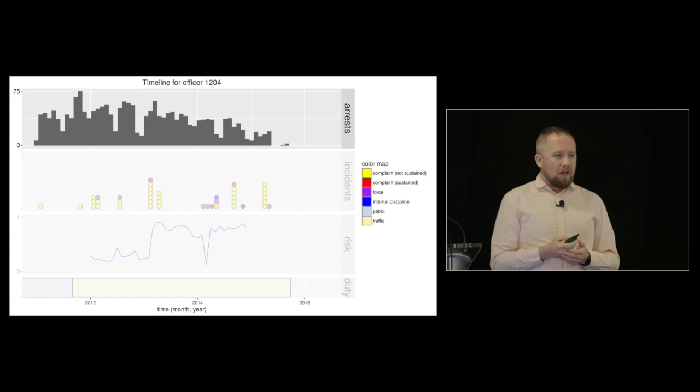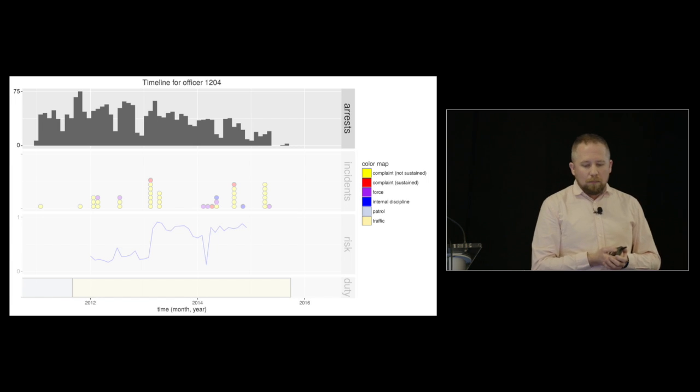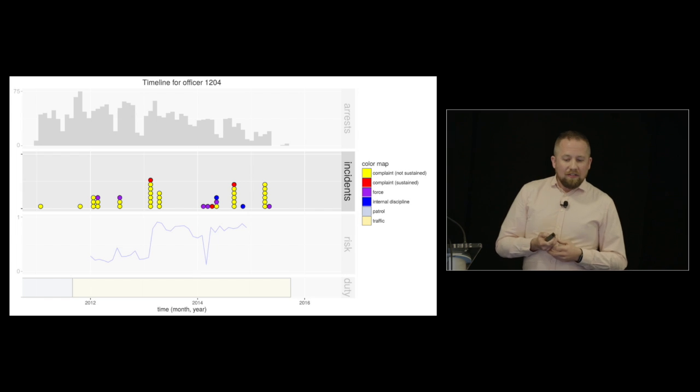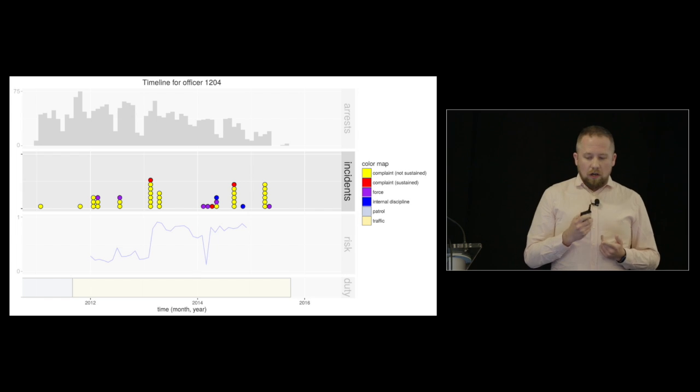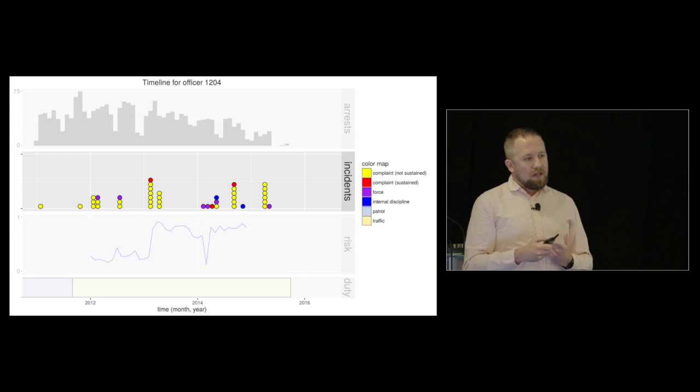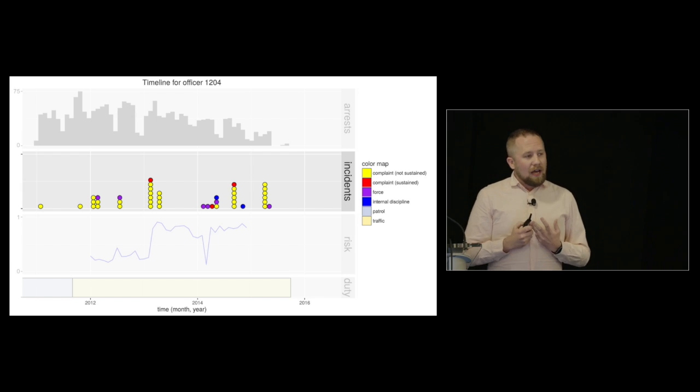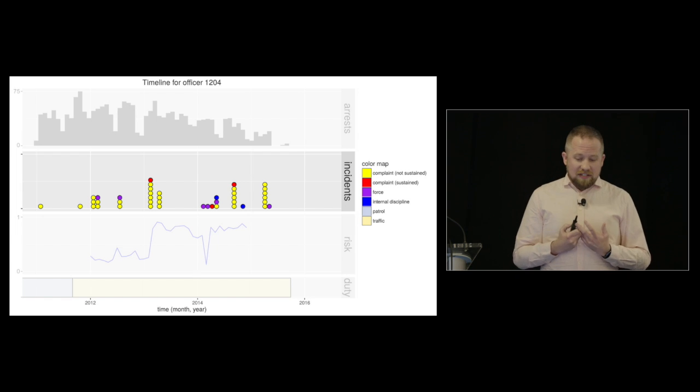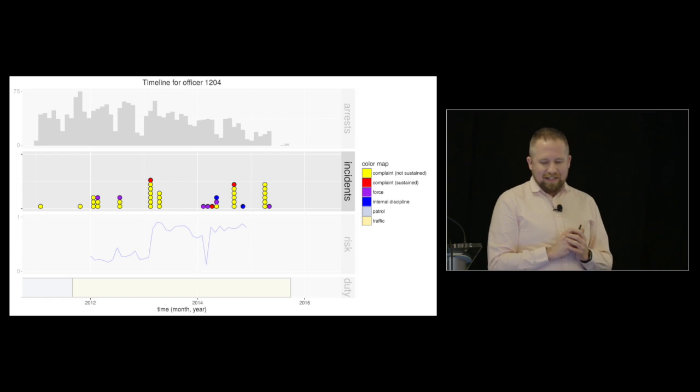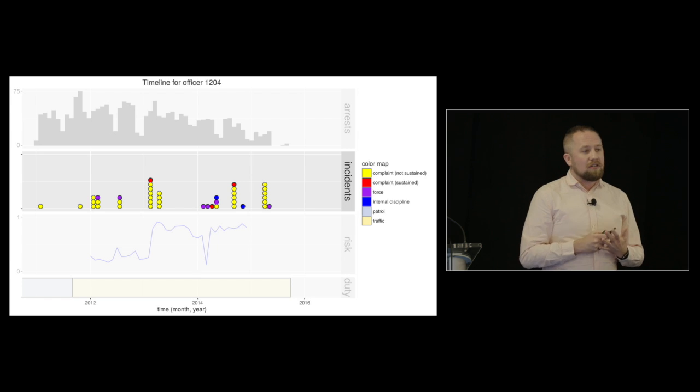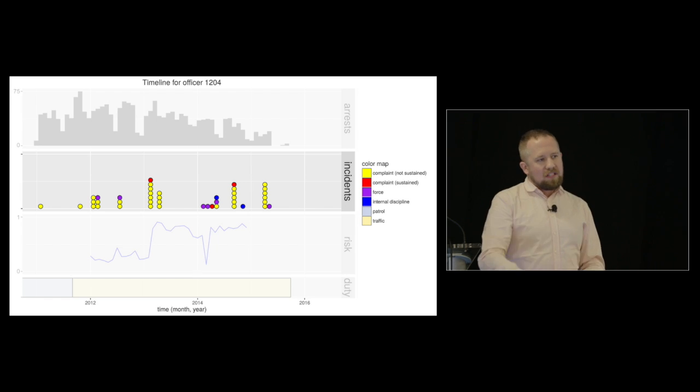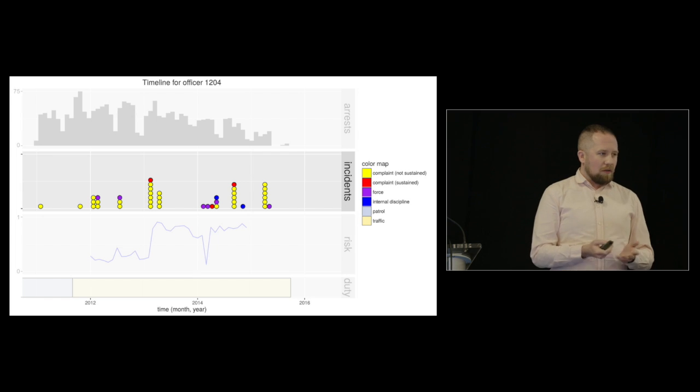Then we have incidents. Here, the yellow dots represent complaints that were lodged but not sustained when they were investigated. The purple dots represent uses of force. The red dots represent complaints that were sustained. And the blue is internal discipline processes. So something like if a supervisor said, you did this wrong, but there was no actual complaint from a citizen.